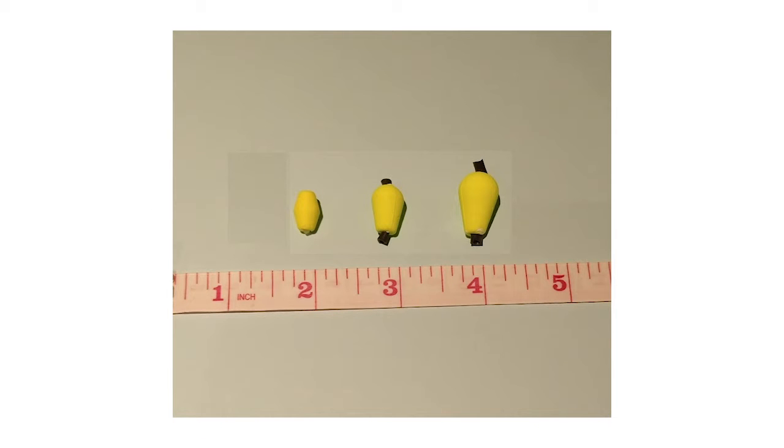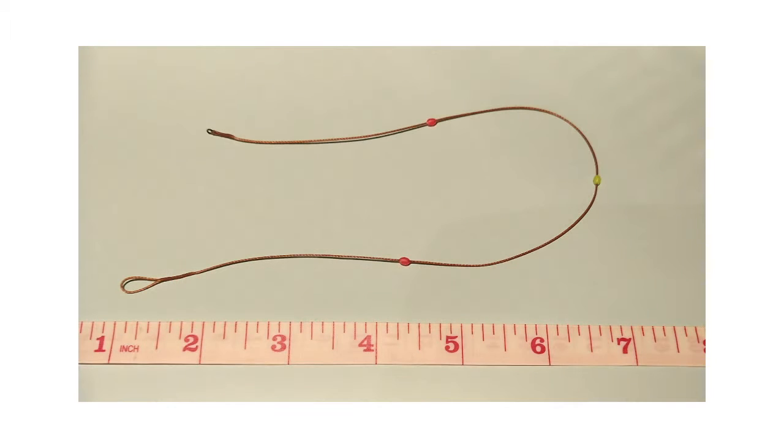They come in many forms. You can have a standard bung, a thingy me bob, New Zealand strike indicators made with wool.